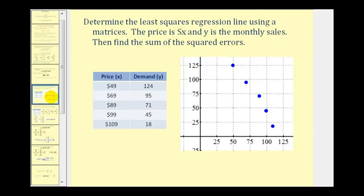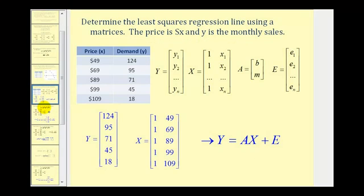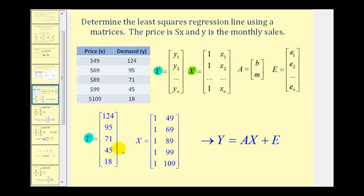We want to determine the least squares regression line from the given data, where x is the price in dollars and y is the demand in monthly sales. From the graph of the data, a linear regression line is going to be a pretty good fit. Let's set up our matrices. Matrix y is a five by one column matrix with the given y values. Matrix x will be a five by two matrix, where the first column consists of ones and the second column consists of the given x values. Given these two matrices, we have the matrix equation y equals A times x plus E.